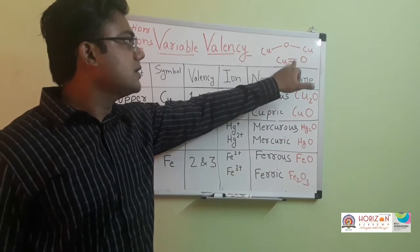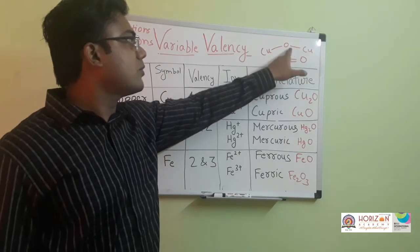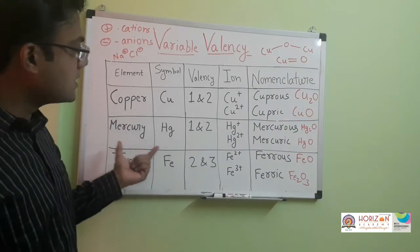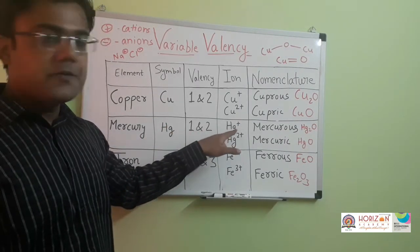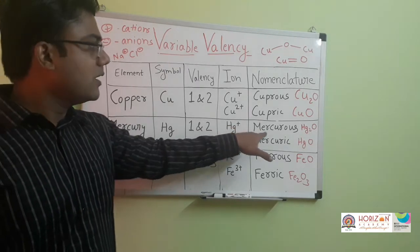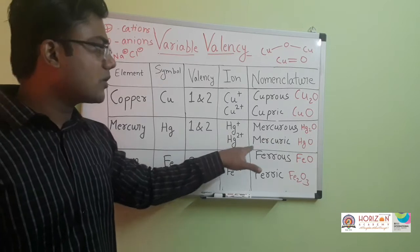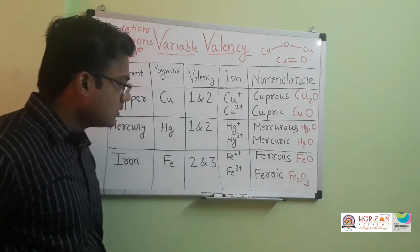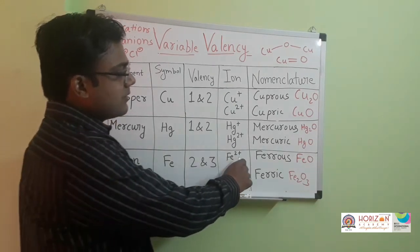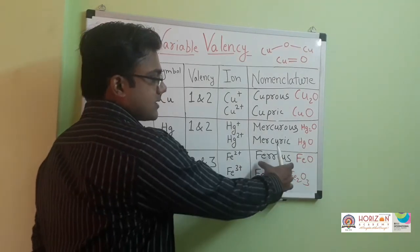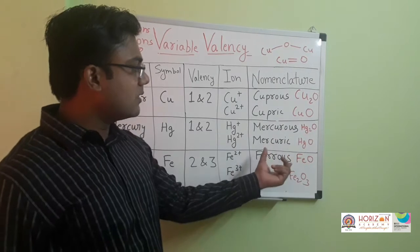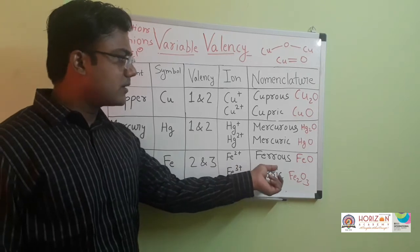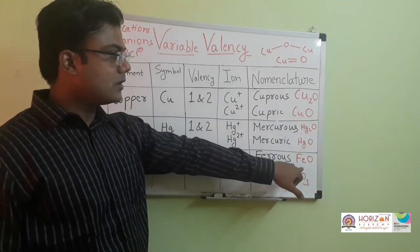In the same way, mercury has both one and two valencies. If it is losing one electron it forms mercurous oxide, and if it is losing two electrons it forms mercuric oxide, HgO. Similarly, iron has two and three valency. If iron is losing two electrons it is known as ferrous, and if it is losing three electrons it is known as ferric.